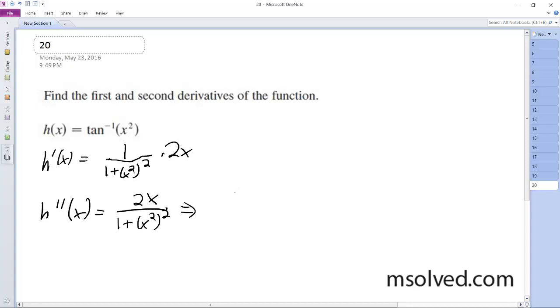So using the quotient rule, we're going to have 1 plus x to the fourth times 2 minus 2x times 4x to the third.